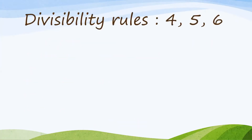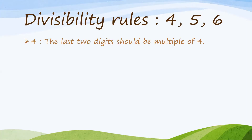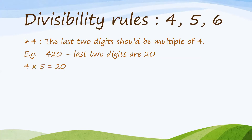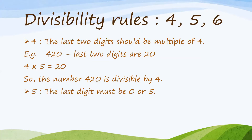Divisibility Rules of 4, 5 and 6. The Divisibility Rule of 4 says that the last two digits should be a multiple of 4. For example, the number 420 — the last two digits are 20, and 4 times 5 is 20. So, the number 420 is divisible by 4.